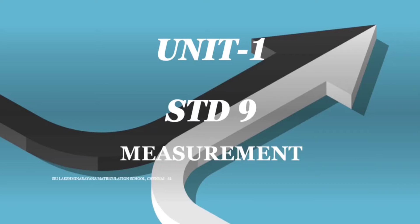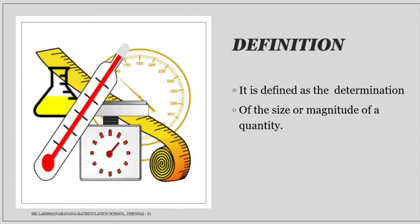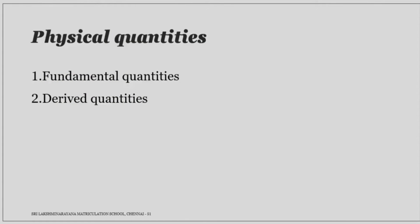Let's start the lesson with the definition of measurement. Measurement is defined as the determination of the size or magnitude of a quantity. Physical quantity is a quantity that can be measured.